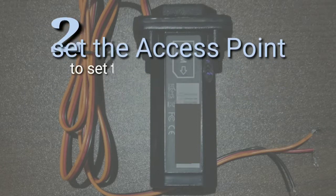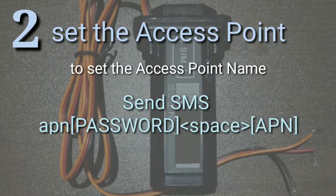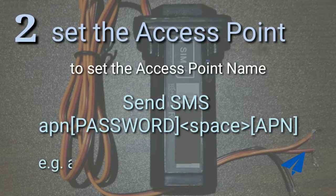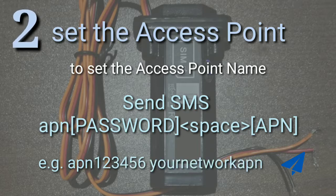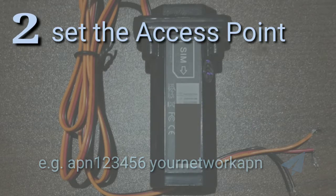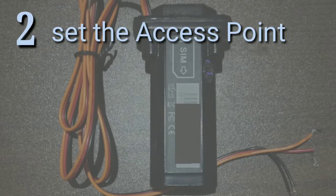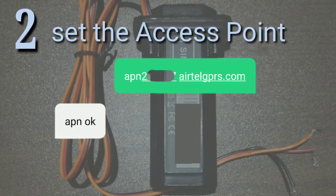To set the access point name, write SMS: APN, then without leaving space write your password, and then leave a space followed by the access point name. Send this SMS to the device. The device must respond through an SMS saying: APN OK.